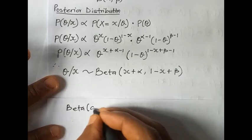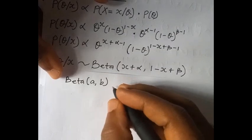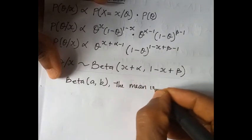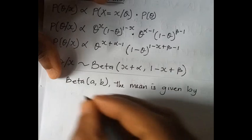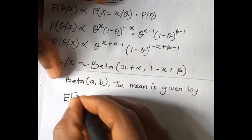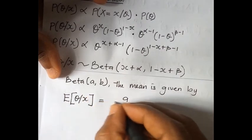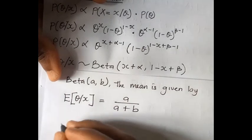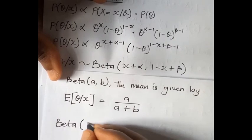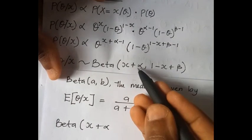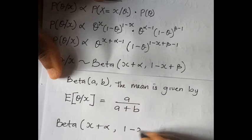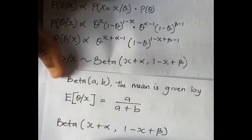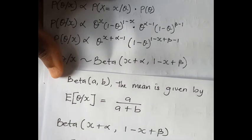For a beta distribution, the mean is given by E[θ | X] = a / (a + b). For our posterior distribution, we have a = X + α and b = 1 - X + β.